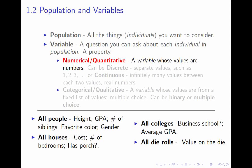A categorical variable is a multiple-choice question — a question whose answer is one from a list of possible values. Take a moment to look at the variables in the examples and decide which are numerical and which are categorical. Those highlighted in red as numerical variables are: a person's height, GPA, and number of siblings — all answers that are numbers. The categorical variables are: favorite color (one from a list of colors) and gender (one from the list male/female).